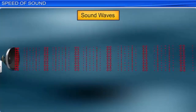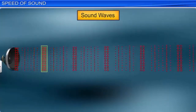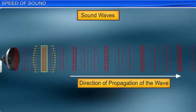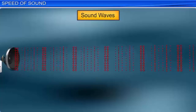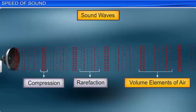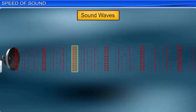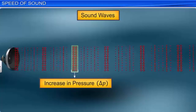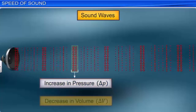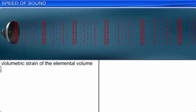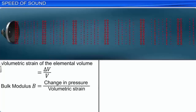Sound waves, which are longitudinal waves, propagate with the vibrations of the particles of a medium in the direction of propagation of the waves. Sound waves in air consist of propagating compressions and rarefactions of small volume elements of air. In the region of compressions, there is an increase of pressure delta p, due to which the volume v of the elemental volume decreases by delta v. The volumetric strain of the elemental volume is denoted by the ratio between delta v and v.